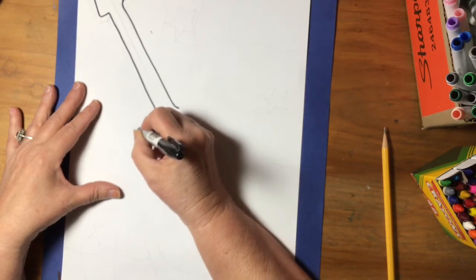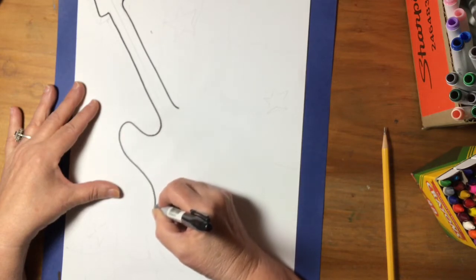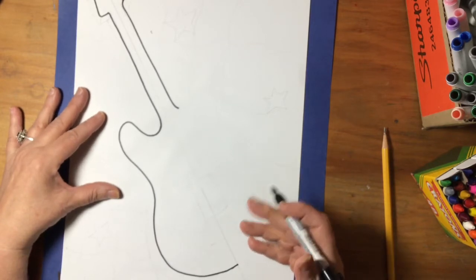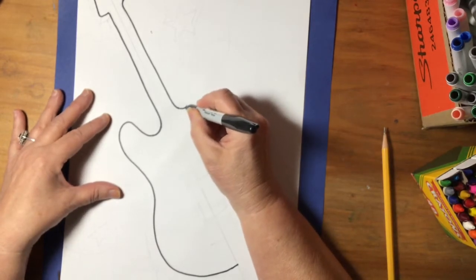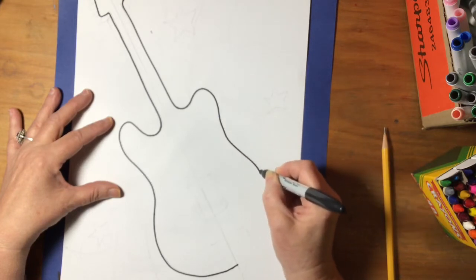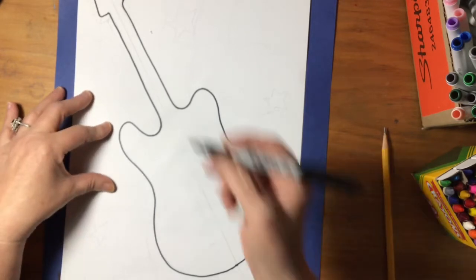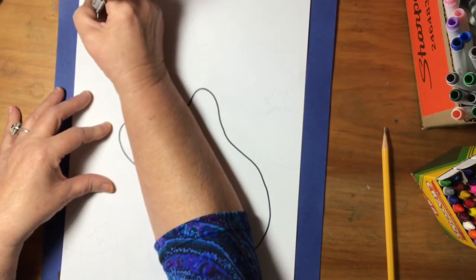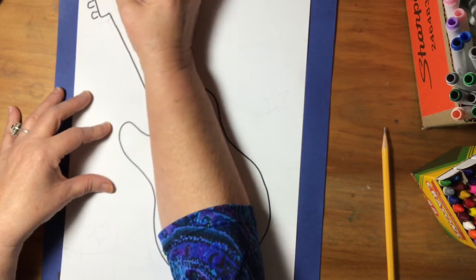I'm going to come up here and make kind of a rounded shape. If it's not exactly like the picture, who cares, because this is an original, this is one-of-a-kind. It doesn't need to be like any picture, just kind of use the pictures to go by. So now I have the shape of my guitar and I'll draw those little tuning keys up here. I guess if I've got eight of those, this must have eight strings.